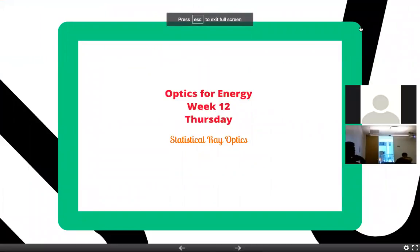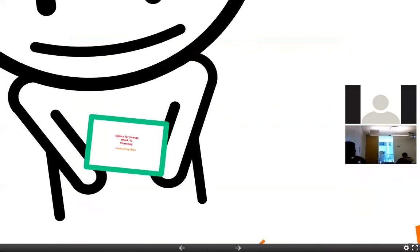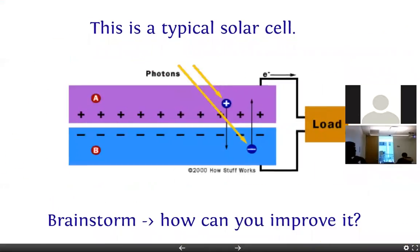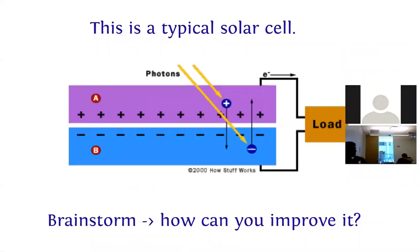Today's topic is quite interesting but also somewhat complicated, so we should try to go through it carefully. This is the idea of statistical ray optics. Let's first try to understand why we need to study something like this. The reason is simple: we are trying to essentially improve the performance of a solar cell.